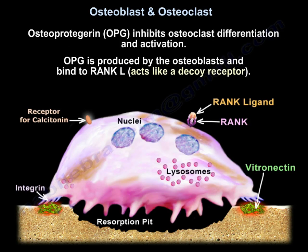Osteoprotegerin, OPG, inhibits Osteoclast differentiation and activation. It is produced by the Osteoplast and binds to Rank-L, acting like a decoy receptor.